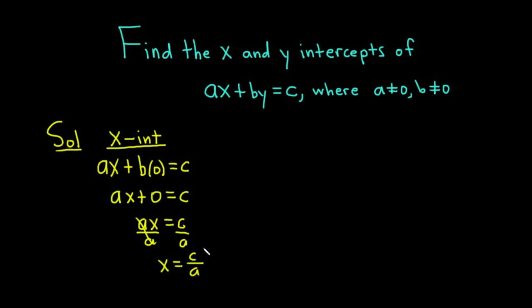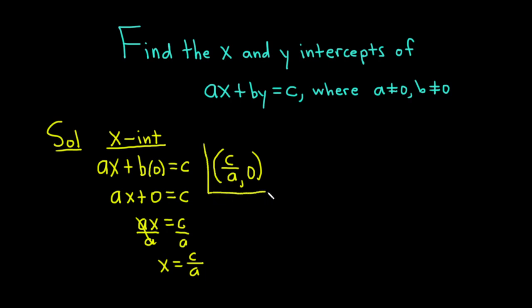You could leave your answer like this, but it is better to write it in ordered pair form. We know that x is equal to c over a — that's the first coordinate in our ordered pair — and we know that y is equal to zero. So our x-intercept would be the ordered pair (c/a, 0).